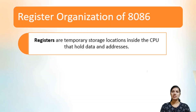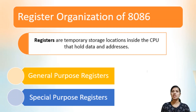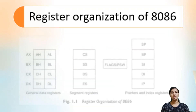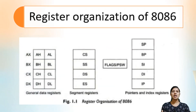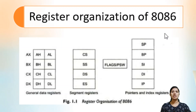Registers of 8086 are classified into two categories: general purpose registers and special purpose registers. Now let's see which registers are inside the 8086 microprocessor. We have general data registers, segment registers, the flag register, and pointers and index registers. This is the register organization of the 8086 microprocessor.